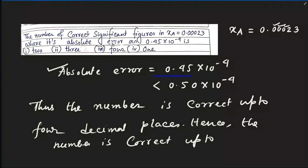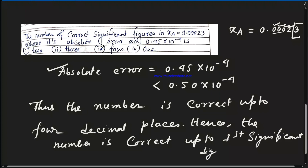First, second, third, fourth — the number is correct up to four decimal places. The first significant digit confirms the number is correct up to four decimal places.